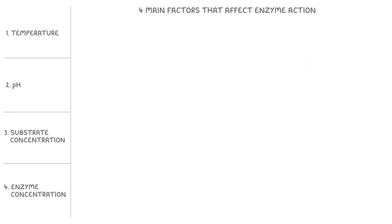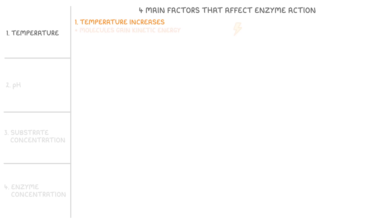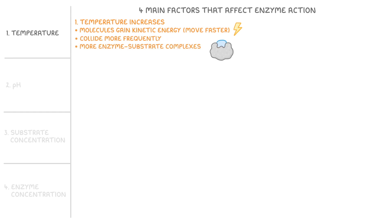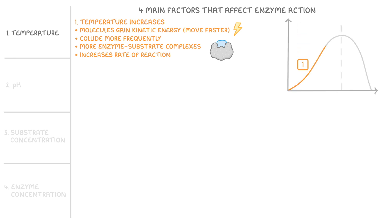Let's bring in those four factors again and start by looking at temperature. As temperature increases, molecules gain kinetic energy and so move faster. This means they collide more frequently and so form more enzyme-substrate complexes. As a result, this increases the rate of reaction, which you can see on this first part of the graph showing temperature against the rate of reaction.